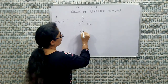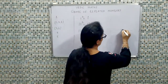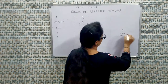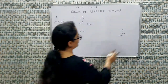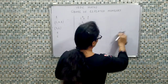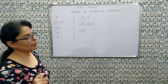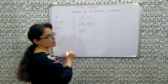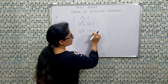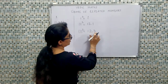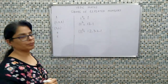Now coming to triple one ka square. We have multiple ways, but we would avoid the direct multiplication method and identify the trick. Triple one mein kitne ones hain? Teen ones hain. So we write: one, two, three. Three is the upper limit because number of ones is three. Then we come back down: two, one.